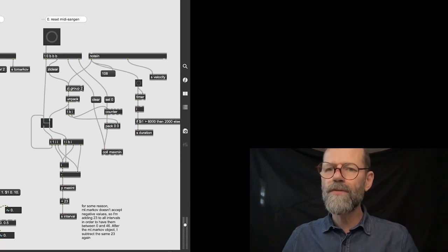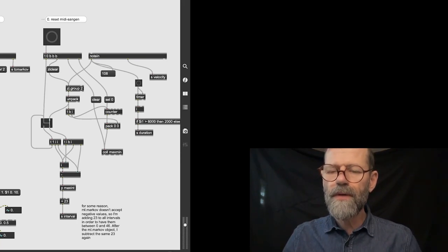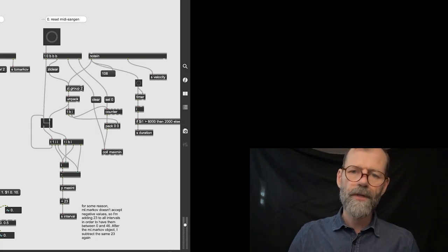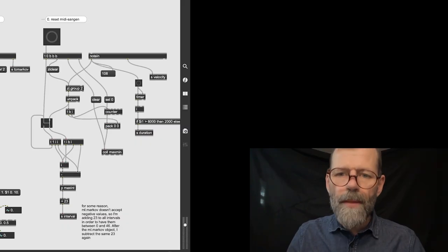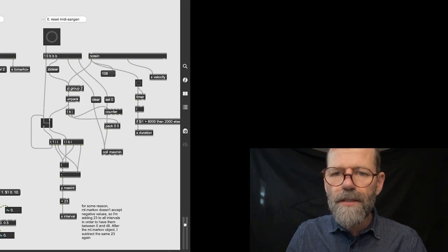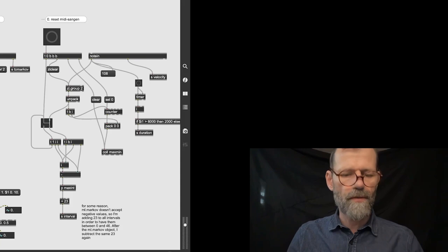Now we want to simplify this part of our patch. We have the velocities coming from the piano, and we simply want to make them match better with our system. I copy what I did in the other patch and put it here. So whenever we have a velocity coming in, we scale it, simplify it, quantize it. This is how it works now.